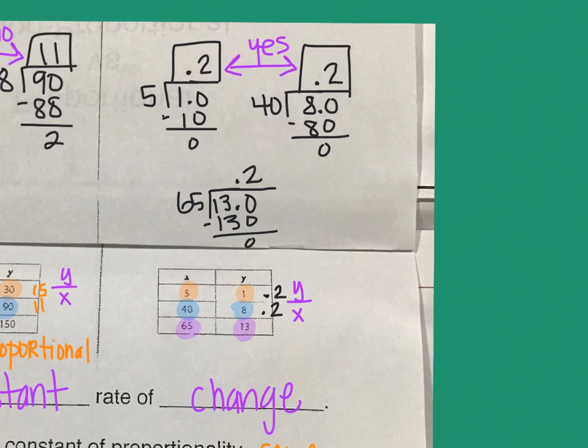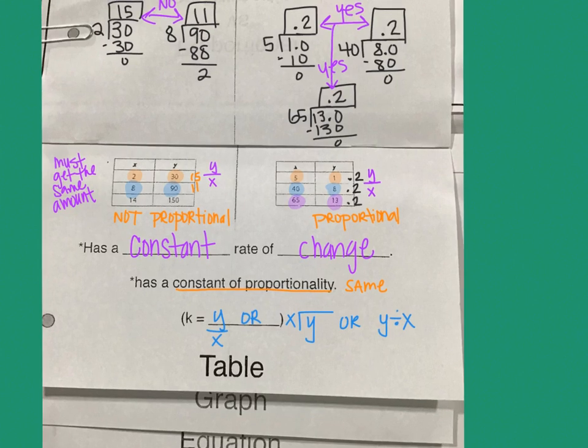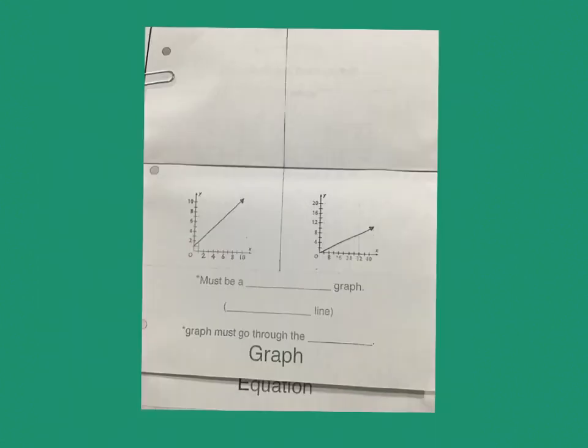So my third number I still got, yes, they all matched every single time with 0.2. So then this table is proportional because every time there was the same constant rate of change. When I looked at the relationship in the table and I divided, I got 0.2, 0.2, 0.2. So again, I had a constant of proportionality or I had a constant rate of change.